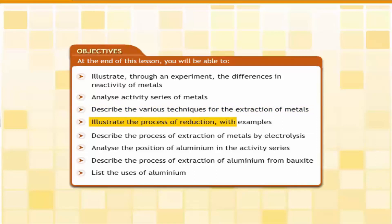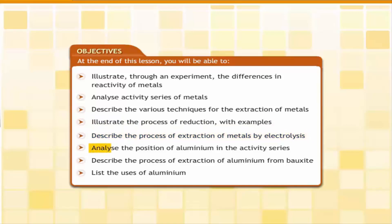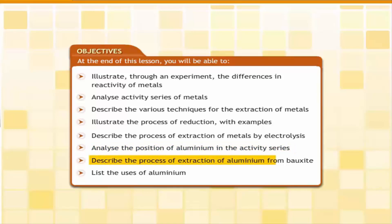You will also be able to illustrate the process of reduction with examples, describe the process of extraction of metals by electrolysis, analyze the position of aluminium in the activity series, describe the process of extraction of aluminium from bauxite, and list the uses of aluminium.